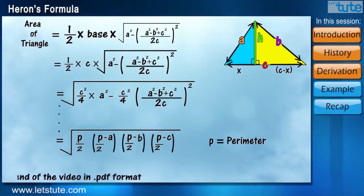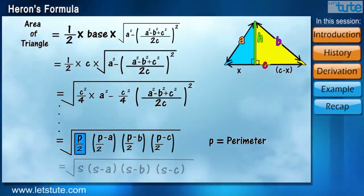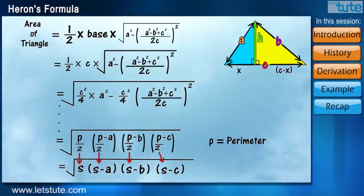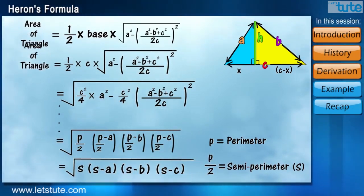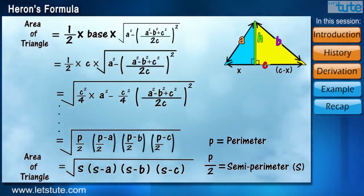Here, we can see that perimeter is divided by 2 everywhere. So, we replace that with S which is nothing but semi-perimeter. And now, we have arrived to a formula which says that area of triangle is equal to square root of S multiplied by S-A multiplied by S-B multiplied by S-C.